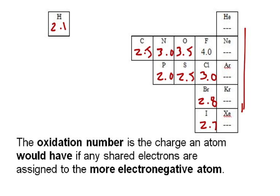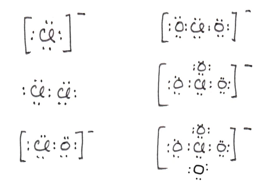These are the electronegativity numbers we sort of keep in our heads. If we look at chlorine across a series — chloride ion, neutral chlorine, hypochlorite ion, chlorite ion, chlorate ion, and perchlorate ion — applying our ideas about oxidation numbers: chloride is not sharing, so its oxidation number is minus 1. For a neutral substance, the oxidation number is 0 — if it's not combined with any other elements, the oxidation number is simply 0.